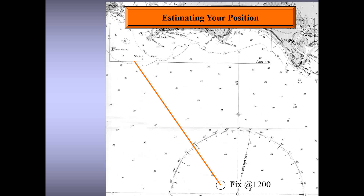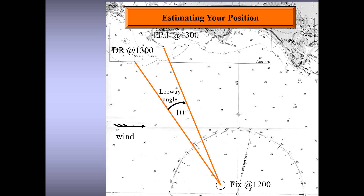Let's start with estimated position. Let's say there is a fixed position at 1200 hours marked by the circle, and the vessel is on a course of some degrees. After one hour the dead reckoning at 1300 hours should be where you see the plus sign. Wind is shown by half arrows, and you can see wind is on the vessel's course. The effect of the wind is called leeway — it is normally expressed as an angle, and the vessel's track differs from the course it is steering as a result of the wind.